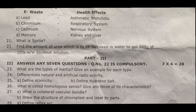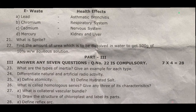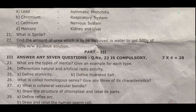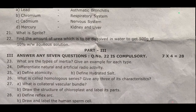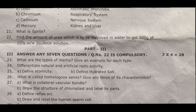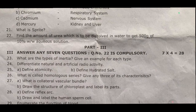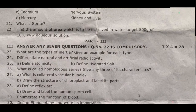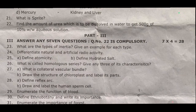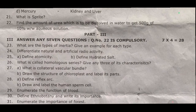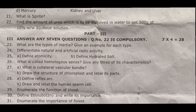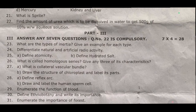Twenty-seven: what is a collateral vascular bundle? Draw the structure of chloroplast and label its parts. Twenty-eight: define reflex arc. Draw and label the human sperm cell. Twenty-eight: enumerate the functions of blood — most important questions.